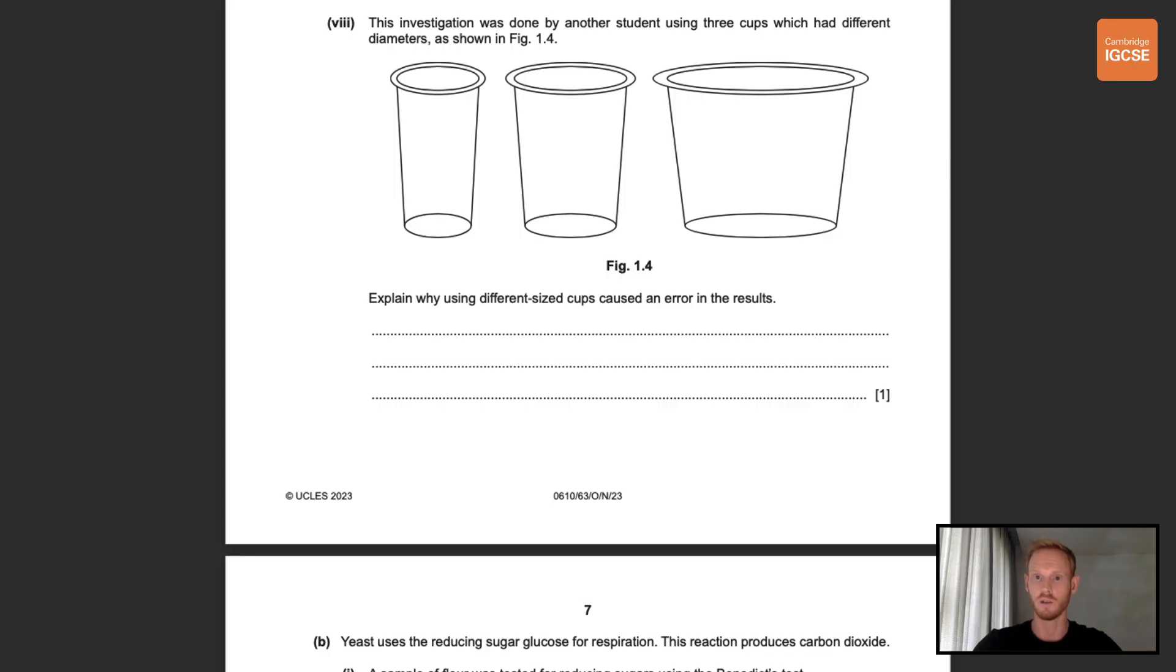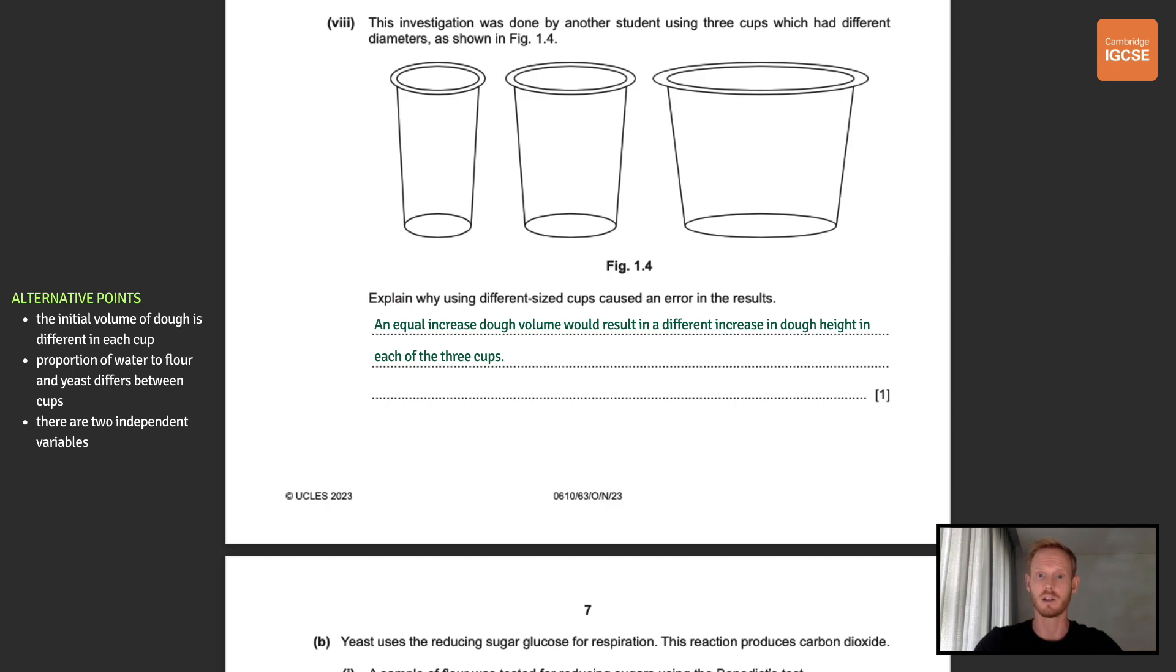Next, the investigation was done by another student using three cups which had different diameters, as shown in figure 1.4. Explain why using different sized cups caused an error in the results. So what's the issue with using cups of different diameters? Well, the point I've made here is that an equal increase in dough volume would result in a different increase in dough height in each of the three cups. We could have also said that the initial volume of the dough is different in each cup, as the initial height of dry ingredients, one centimeter, was the same in each, so far more dry ingredients in the wide cup than the narrow. We could have also mentioned that the proportion of water to flour and yeast differs between cups, as only 10 cubic centimeters of water is added in each case, or that there are two independent variables, temperature and cup size.